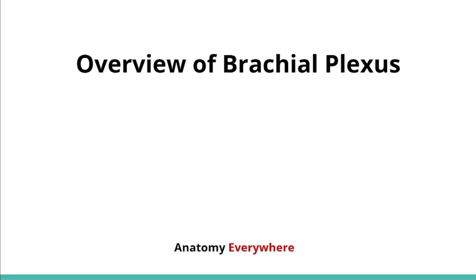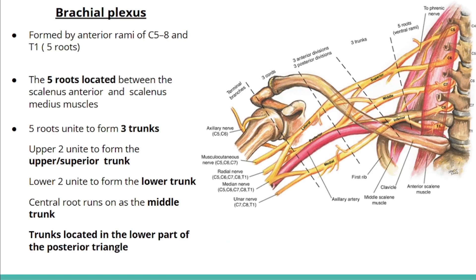Hi everyone, welcome back to Anatomy Everywhere YouTube channel. We are going to discuss the overview of brachial plexus. The brachial plexus is formed by anterior rami of C5–C8 and T1 spinal nerve roots. These five roots are located between the scalenus anterior and scalenus medius muscles.